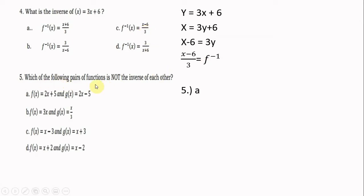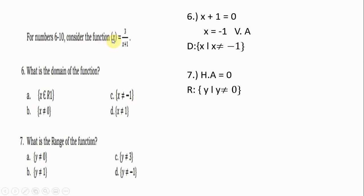Number five: which of the following pairs of functions is not the inverse of each other? It's letter A. For numbers 6 to 10, consider f(x) = 3/(x + 1). The domain: set x + 1 = 0, so x = −1 is the vertical asymptote. The domain is {x | x ≠ −1}. For the range, since the degree of the numerator is less than the denominator, the horizontal asymptote is y = 0, so the range is {y | y ≠ 0}.